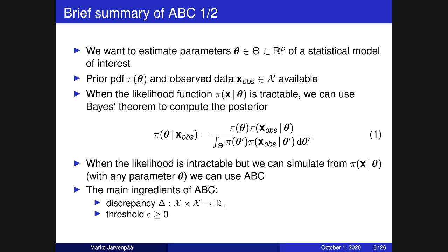Here we are interested in the case where the likelihood function is intractable, so that we can't derive its analytical form or evaluate its value, but we can still simulate some pseudo data from the model so that we can use ABC. The main ingredients of ABC are the discrepancy function delta, which takes two data sets and outputs a value indicating how similar those data sets are. The other key parameter is the threshold parameter epsilon. If you have quick questions, it would be okay to ask during the talk, but for more complicated or fundamental questions, it might be good to wait until the end.